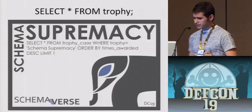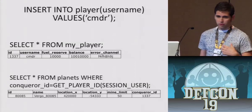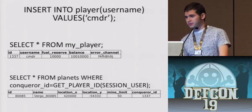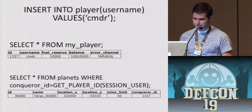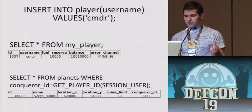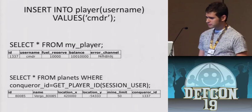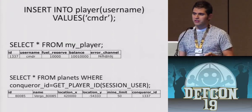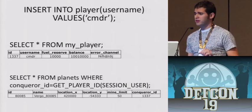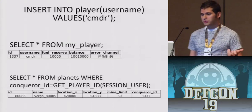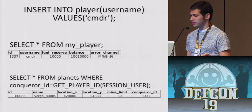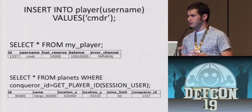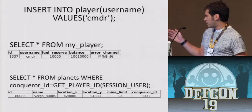How do you actually play? You come to me or anyone at the contest booth and ask to register. When you register, you get inserted into the player table and get an actual user account on the database — yes, you are a user on the database. You also get a row in the players table and a planet assigned to you as your home planet. In the player table, you start out with some money — 10 million — and a fuel reserve. You also have something called an error channel, which I'll get to later. Your planet has a location, a name you can update, a mine limit (only that number of ships can mine that planet per tick), and a conqueror ID, which is you.